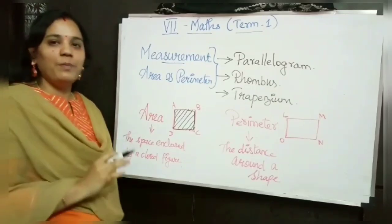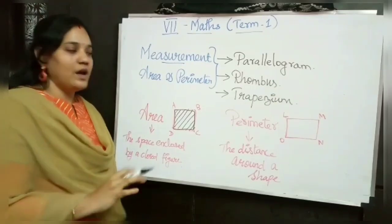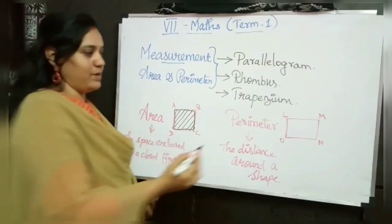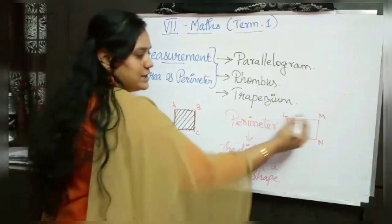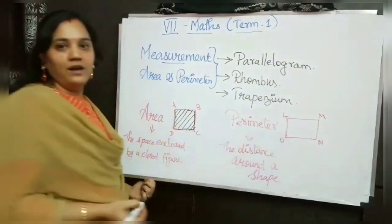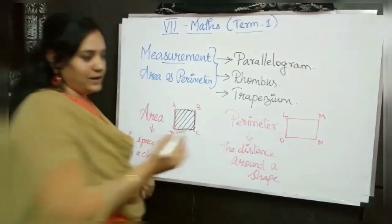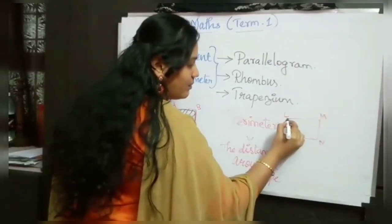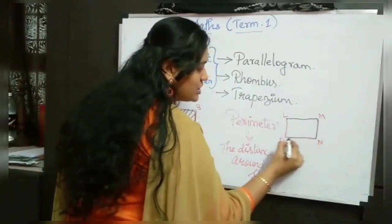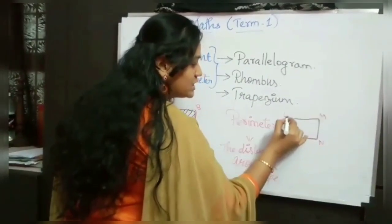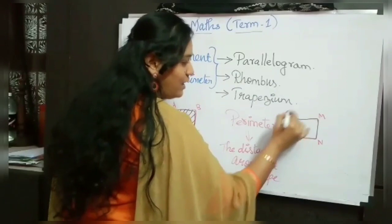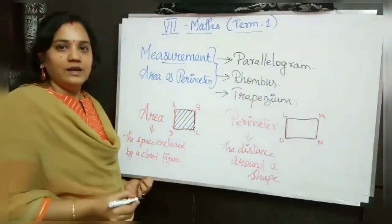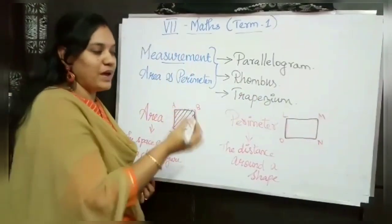What is meant by perimeter? Perimeter is the distance around a shape. For example, I have taken one rectangle. If I am starting from here and measuring the distance from L back to L, that is known as perimeter.